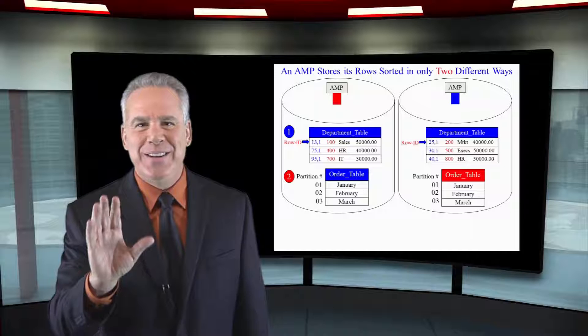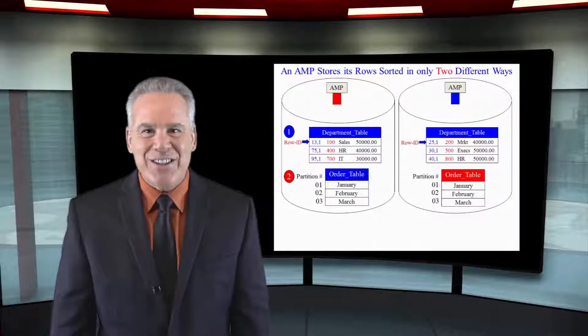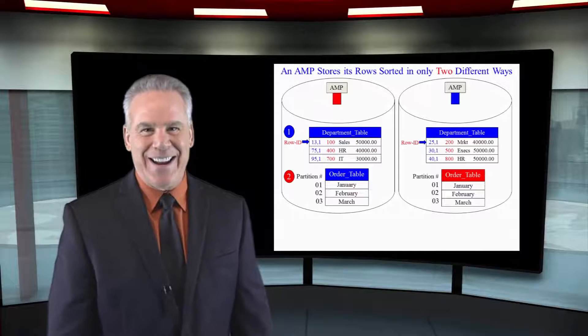Take a look at two different examples right here. At the top, we've got our department table, and it's a normal table. DepNo is its primary index. The rows are hashed and then they're sorted by their row ID on that AMP. In our second example, our order table, we did the month of order date as the partitioning statement. So now the rows are going to be sorted — all the January orders on each AMP first, then February and March. And that's the two ways Teradata AMPs sort.